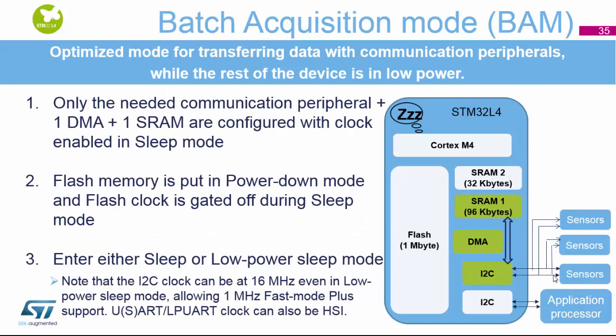The STM32 L4 has a feature called Batch Acquisition Mode, which does exactly this: the DMA and SRAM are powered and configured with the clock, while the rest of the chip including the core is in sleep mode. This lets you optimize power when transferring data received from sensors, then processing and sending it out to a low-power UART or USART to the outside world.